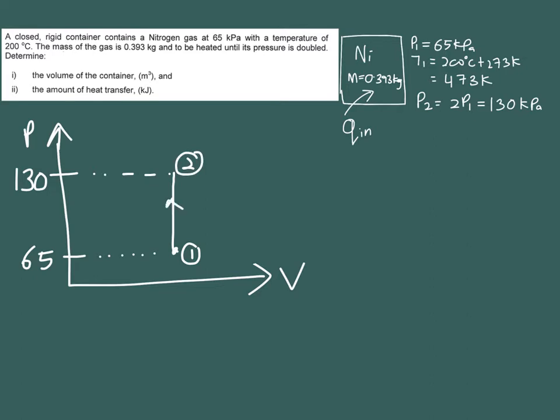Now the question asks you to find the volume of the container and the amount of heat transfer. So this one we are going to use PV equals mRT and this one will make use of your energy balance for your closed system.